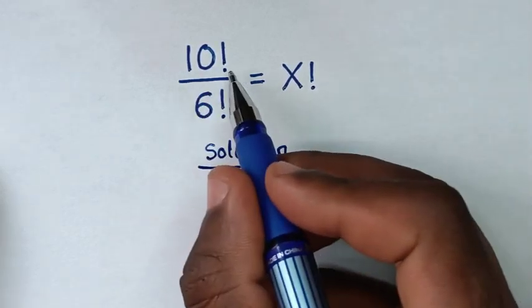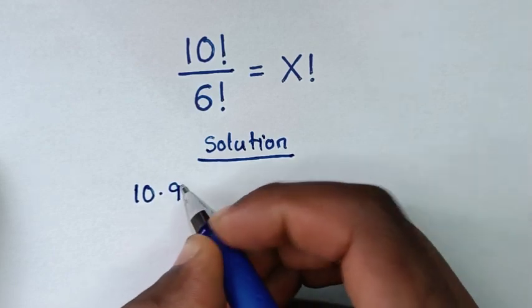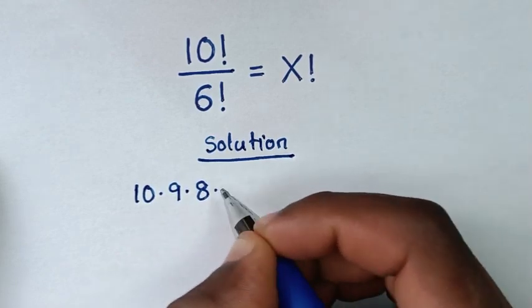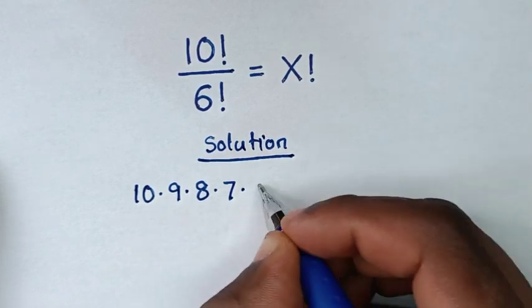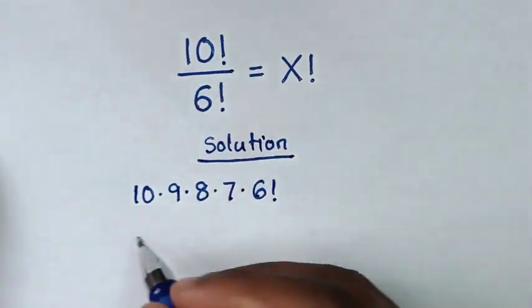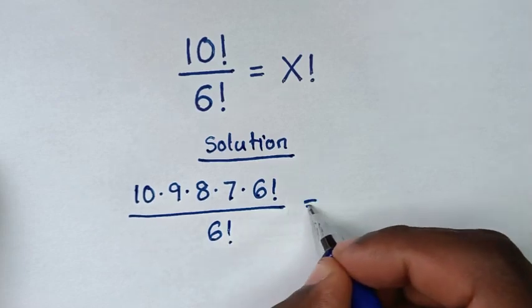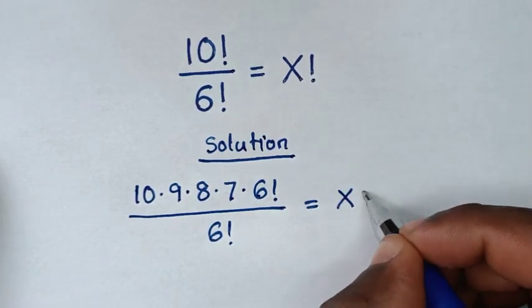From 10 factorial, 10 factorial is the same as 10 times 9 times 8 times 7 times 6 factorial, because here in the denominator we have 6 factorial. So it will be over 6 factorial equals x factorial.